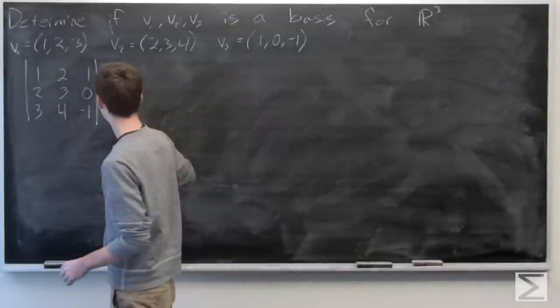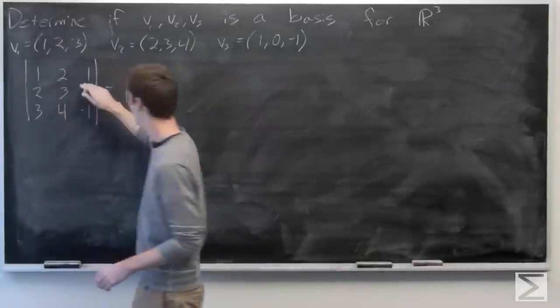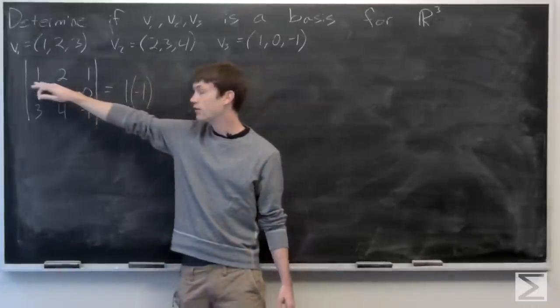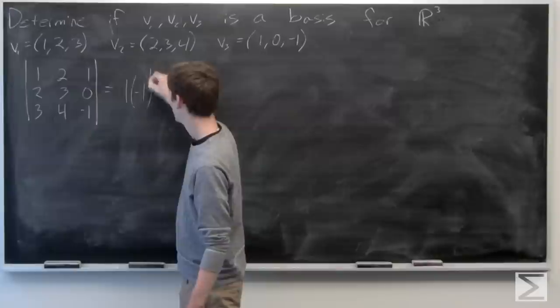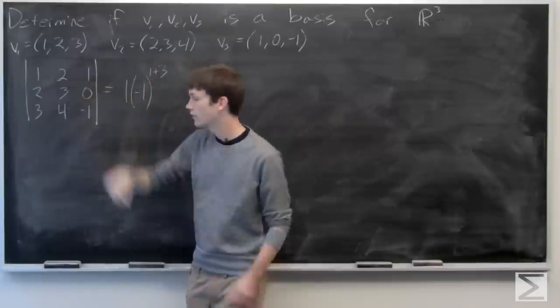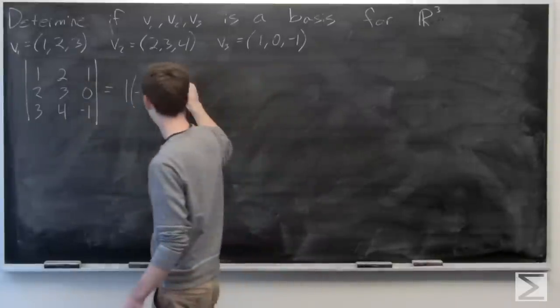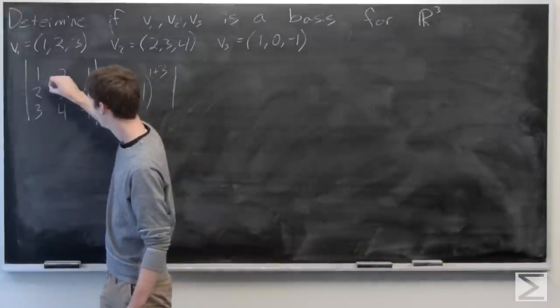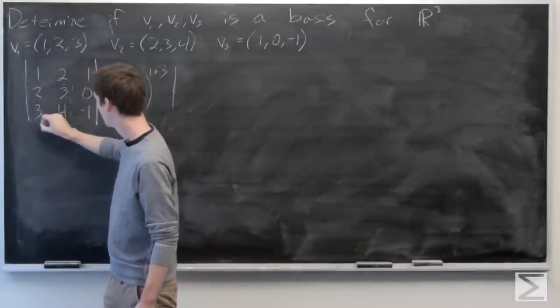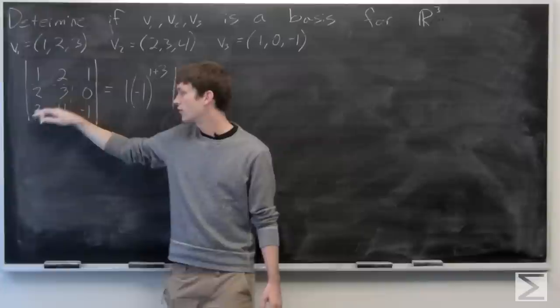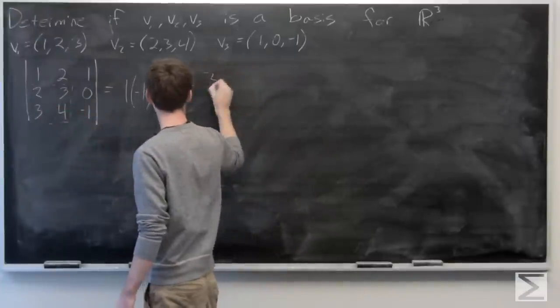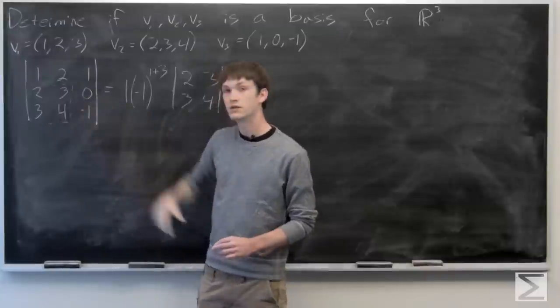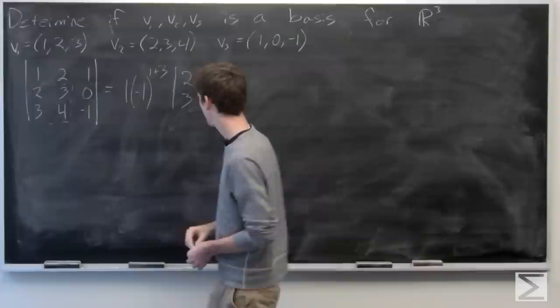So we have 1 times negative 1 to the power of our row is 1 plus 3 for our column. And then we'll multiply that by the determinant of our matrix 2, 3, 3, 4. And then 0 will be 0 for that expansion.